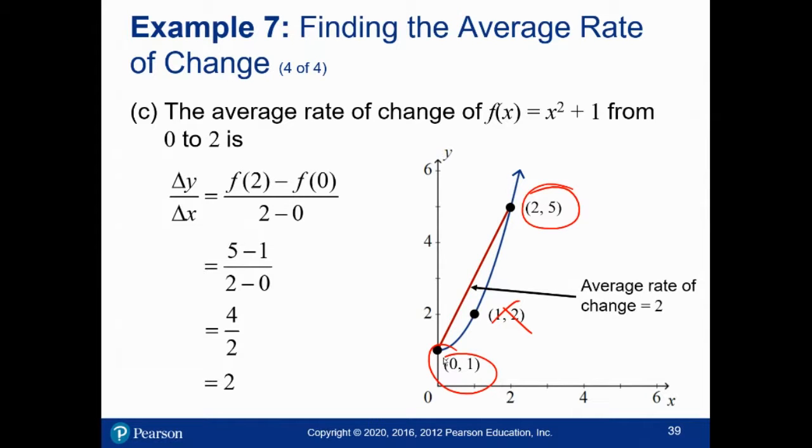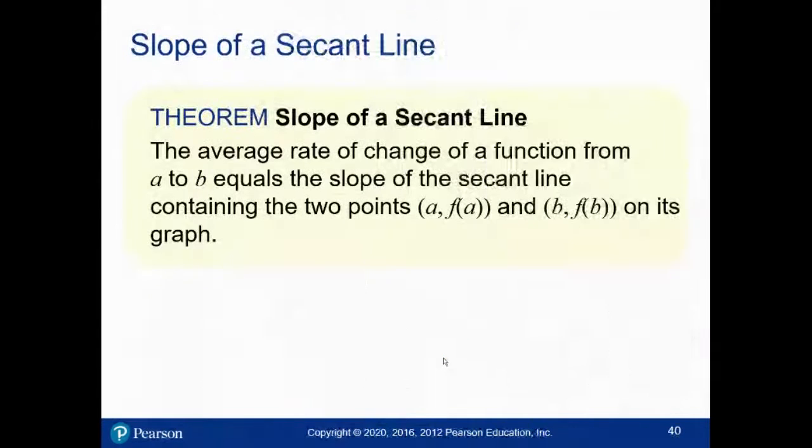The average rate of change is 2. So by changing the interval that you're looking at, you can change the average value of the function. And the average rate of change of the function is the slope of that line connecting those points. That's all this is saying.